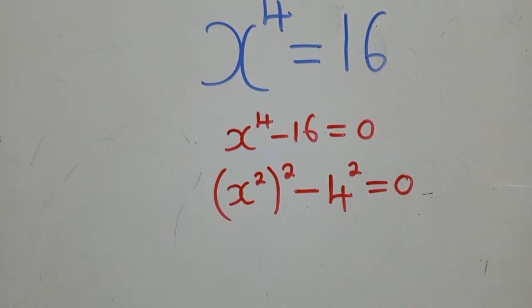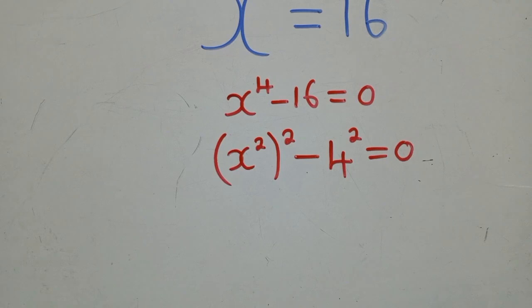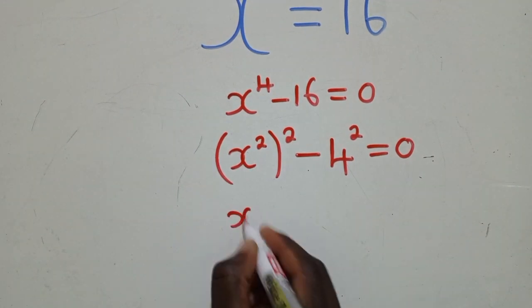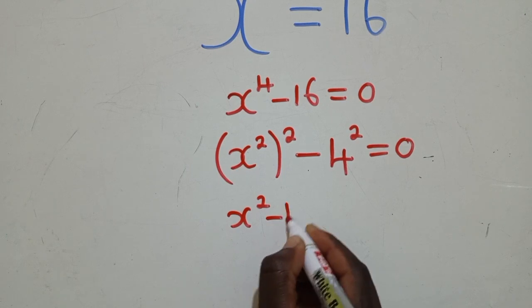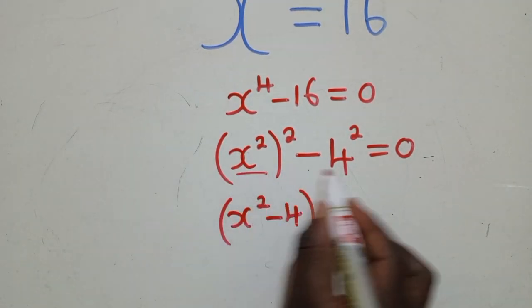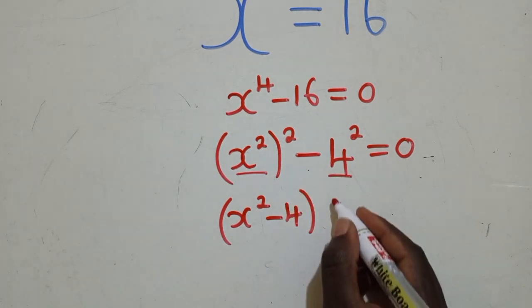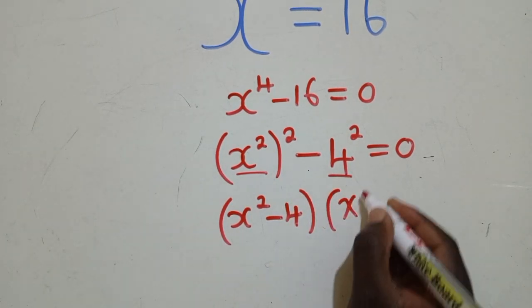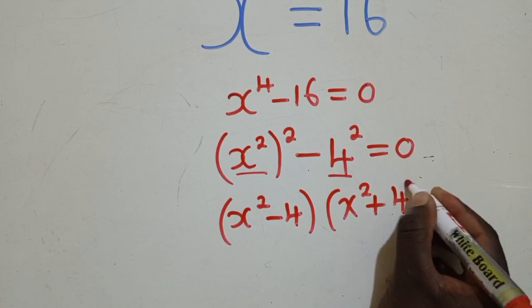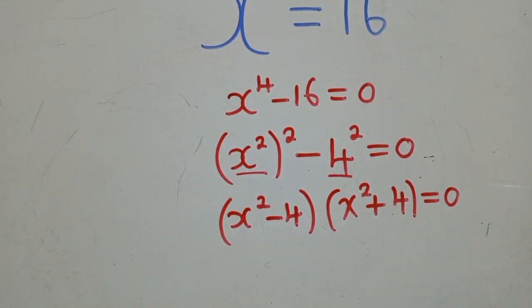So, when we are done with this, we can apply difference of two squares, where we are going to get the basis, X power 2 minus 4 inside the brackets. We've got this and this, including the side. We do this same thing. So, we get, this time around, we put a plus, a 4, and we close, like this.